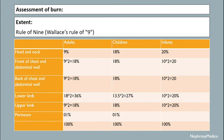Assessment of burns: the extent of the burn is determined by the Rule of Nines, or Wallace's Rule of Nines. The head and neck is 9% in adults, 18% in children, and 20% in infants. The front of the chest and abdominal wall is 9 and 9, equal to 18% in adults, 18% in children, and 10 into 2 equal to 20% in infants. The back of the chest and abdominal wall is 9 times 2, equal to 18% in adults, 18% in children, and 20% in infants.